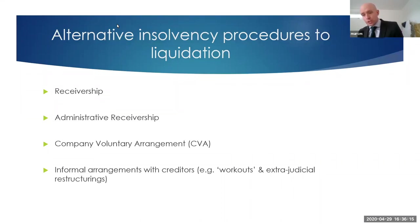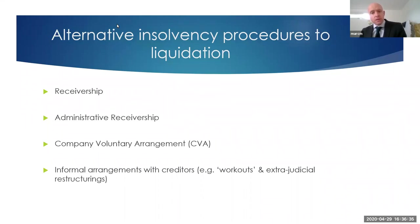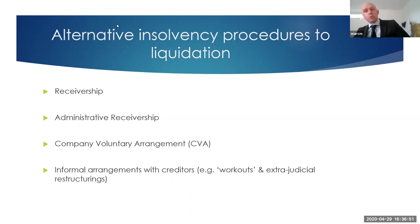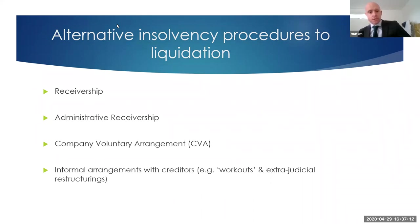A CVA does involve going to court and will be regarded as an insolvency event, affecting the company's credit worthiness and ability to borrow in future. If you want to avoid going to court, there are informal arrangements such as a workout — similar to a CVA but seeking informal consent from all creditors without court involvement. Because the court is not involved in a workout, you will have to get all creditors on board. If even one creditor is unhappy with the restructuring, you will have to go to court and obtain a CVA to force them into line. There are advantages and disadvantages to using the courts in these situations.